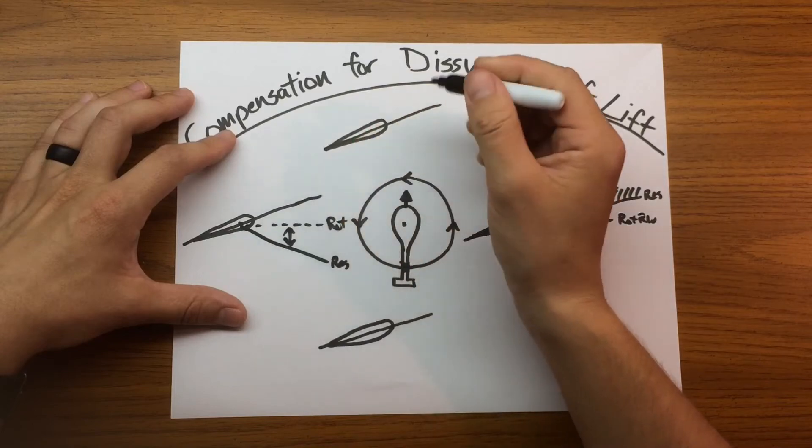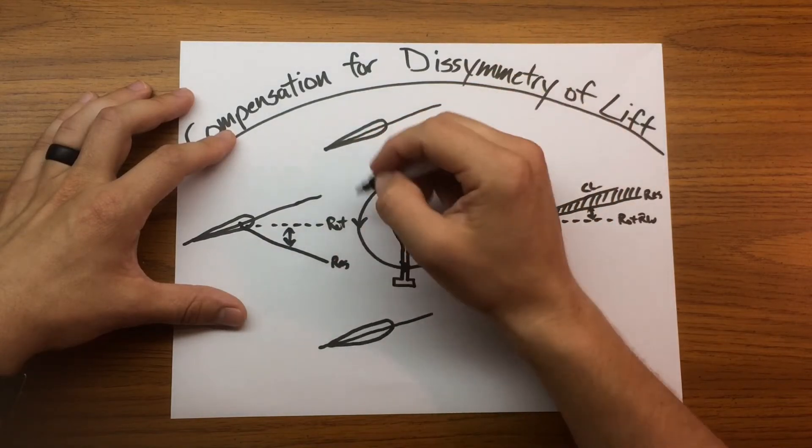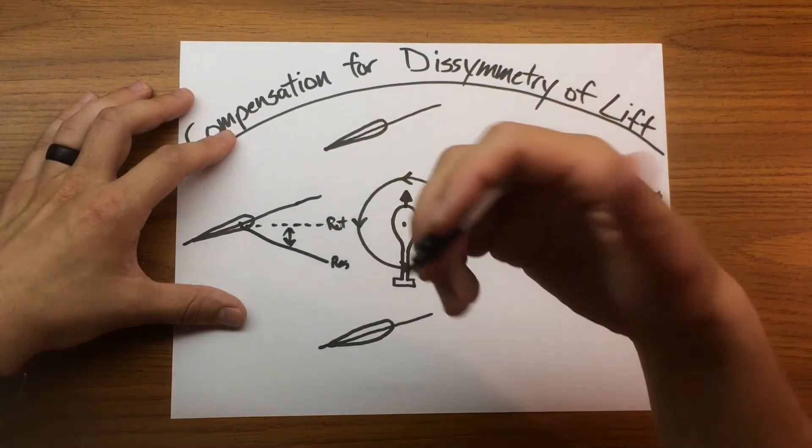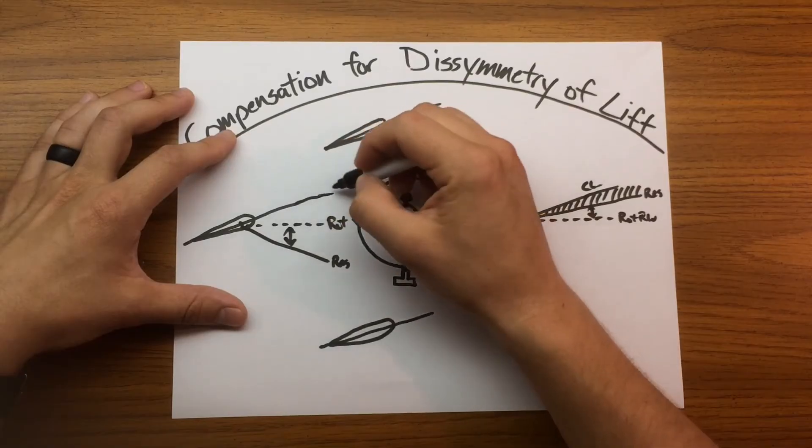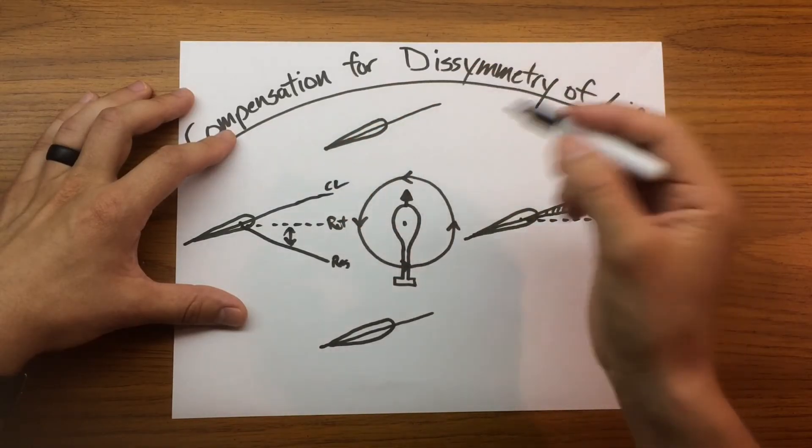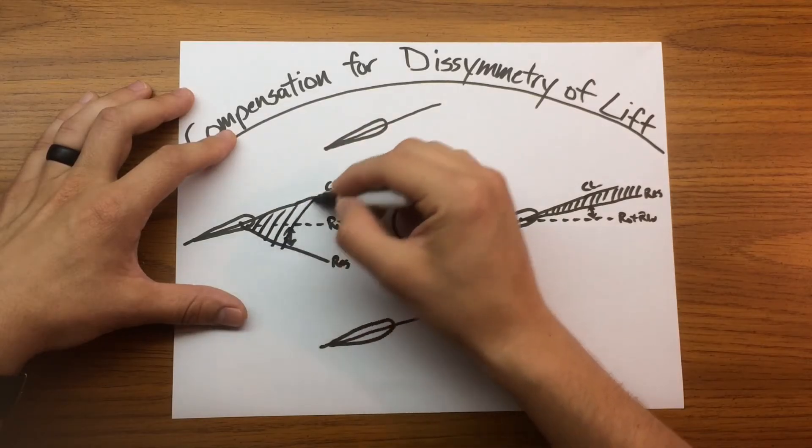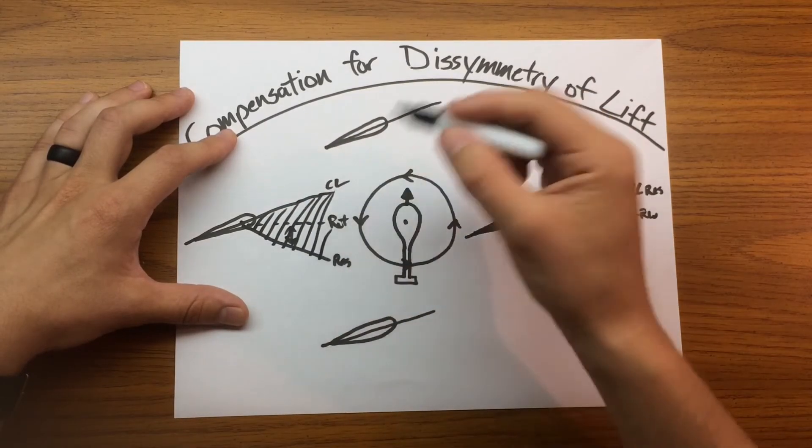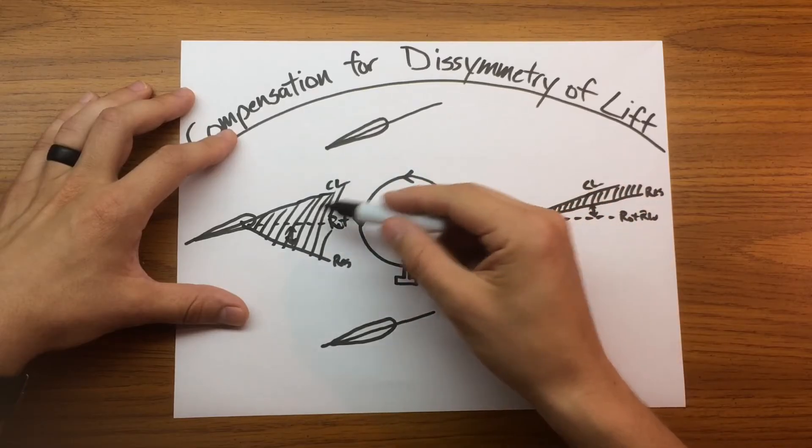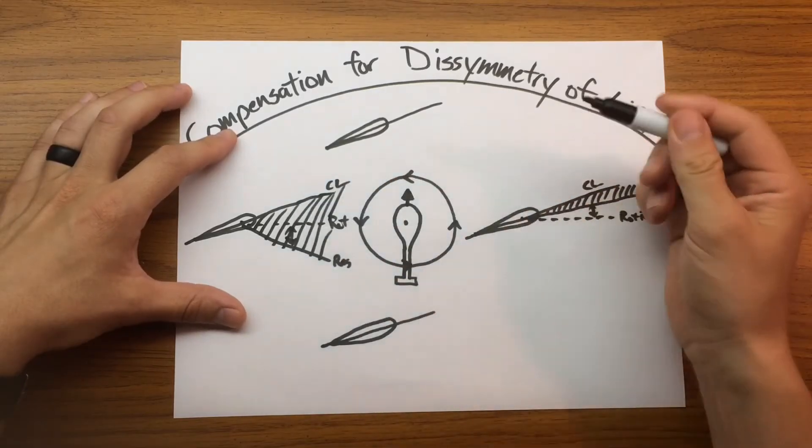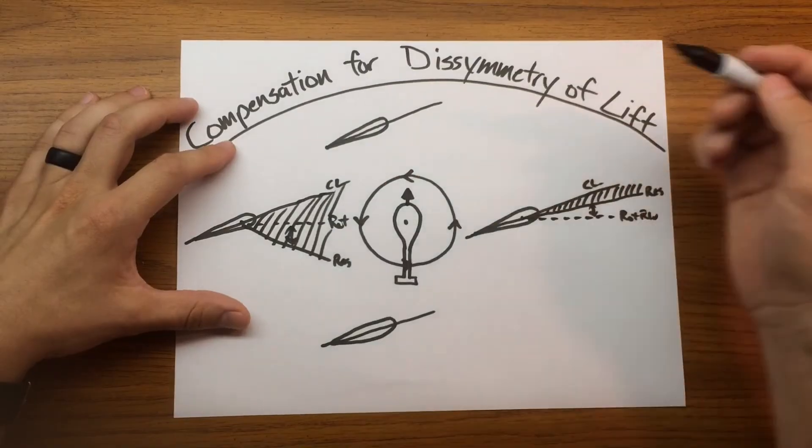Now this is changing our angle of attack just like it did over here. And so now our lifting area is this region. So that downflow has increased the angle of attack, it's increased our amount of lift generated on this side of the blade.